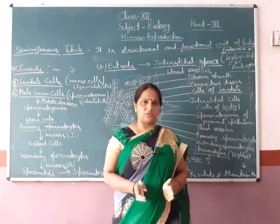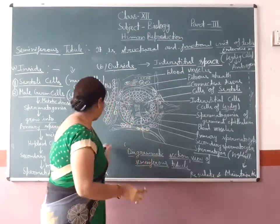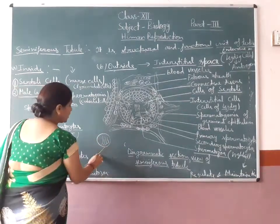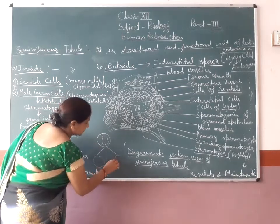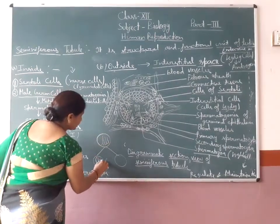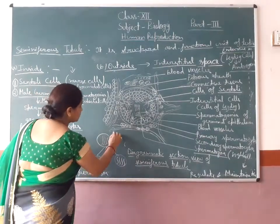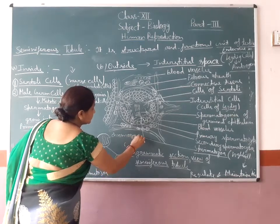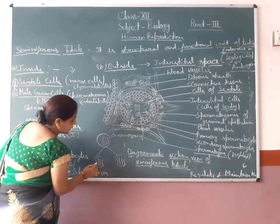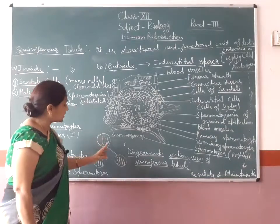Mitosis and meiosis — two types of division are found in cells. In mitosis division, when the parental cell, let's say, consists of four chromosomes and it divides, then the number of chromosomes in the daughter cells is also four. So it is called equational division because the chromosome number in daughter cells is the same as in the parent cell.